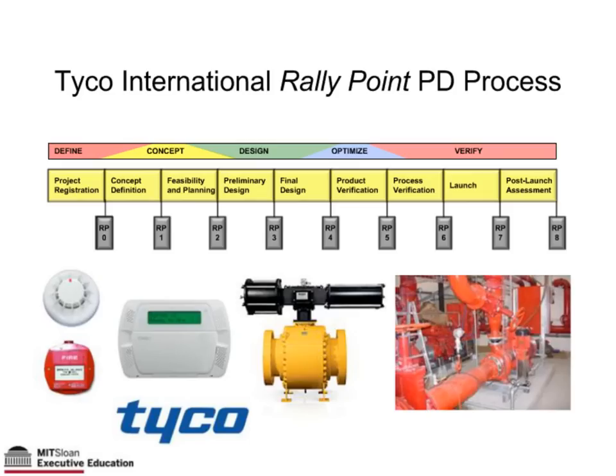Here's an example from Tyco, a company in industrial products — particularly monitoring and control equipment. They've taken the product development process and in a very systematic way laid it out into nine phases. Each phase has a very defined package of work, and there's a way to know whether we got it right at the end of each phase. Those checks are called rally points — the gate approvals. They've turned this into a carefully documented product development process that's quite systematic.